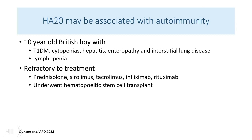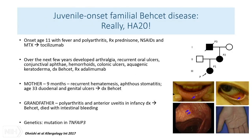Patients can also look purely autoimmune — one patient started with type 1 diabetes, had cytopenias, interstitial lung disease, and needed a stem cell transplant with good results after being refractory to significant treatments. Another interesting family was thought to have juvenile-onset familial Behçet's. The presenting features may not initially suggest Behçet's: this patient had fever and polyarthritis, was thought to have polyarticular systemic JIA, did very well initially on tocilizumab, but then developed arthralgia, recurrent oral ulcers, conjunctival ulcers, and colonic ulcers — eventually diagnosed as Behçet's and did very well on adalimumab.